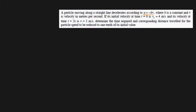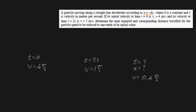The acceleration is equal to minus kv, where k is a constant and v is the velocity in meters per second. We're given boundary conditions: at t = 0, velocity equals 4 m/s, and at t = 2 seconds, v equals 1 m/s. We're asked to find the time and corresponding distance when velocity is one-tenth of its initial value, basically 0.4 m/s.